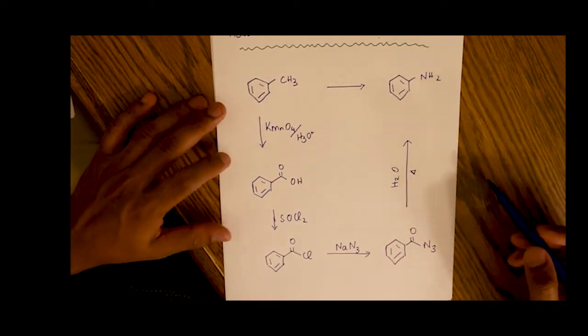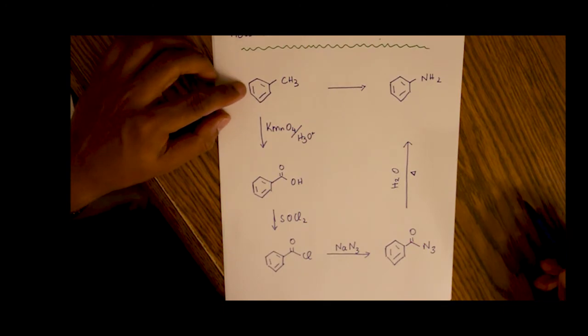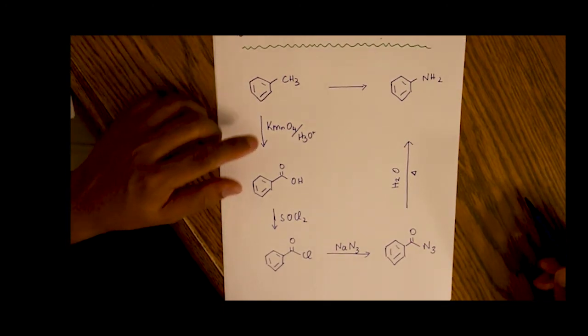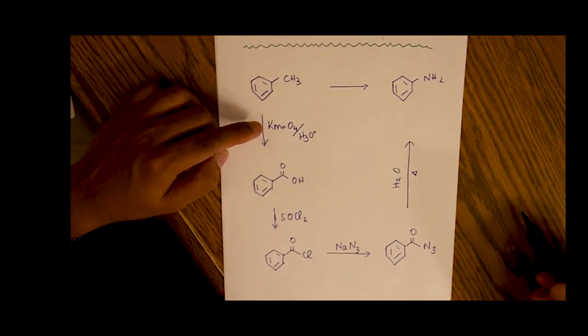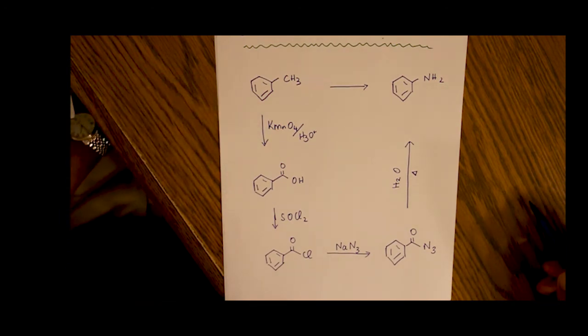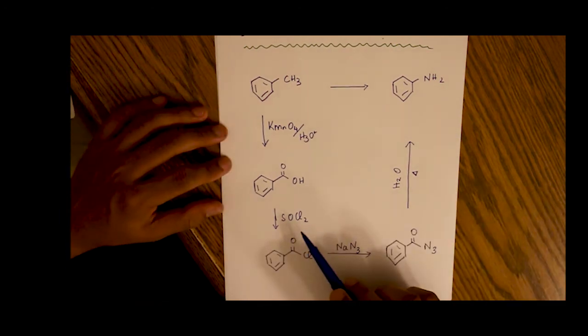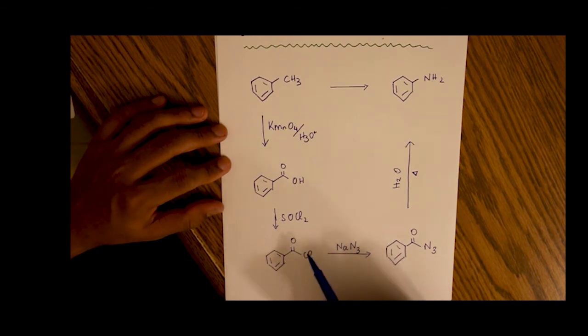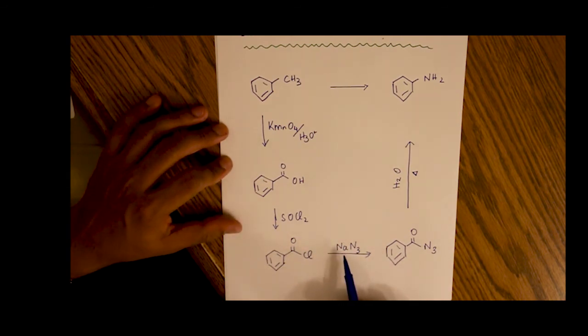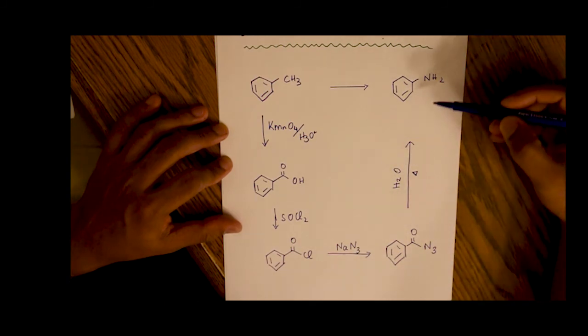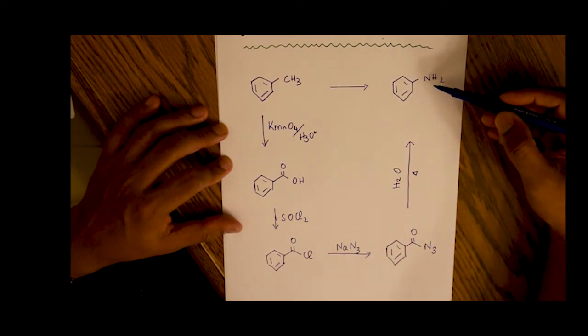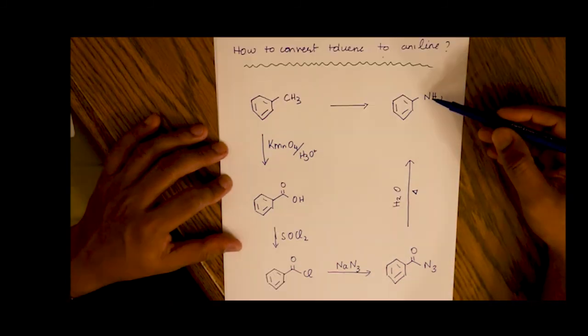So a total of four steps. First, you're converting the toluene into benzoic acid by oxidizing it with the strong oxidizing agent potassium permanganate. Then you use thionyl chloride to get the acid chloride. Then you use sodium azide NaN3 to get the azide. And then from the azide you reduce it with heat and water to get the amine.